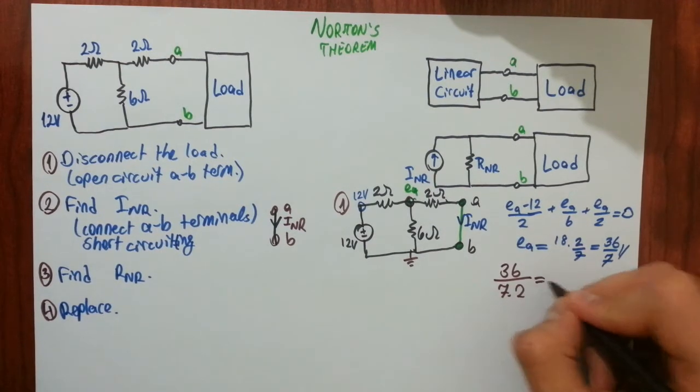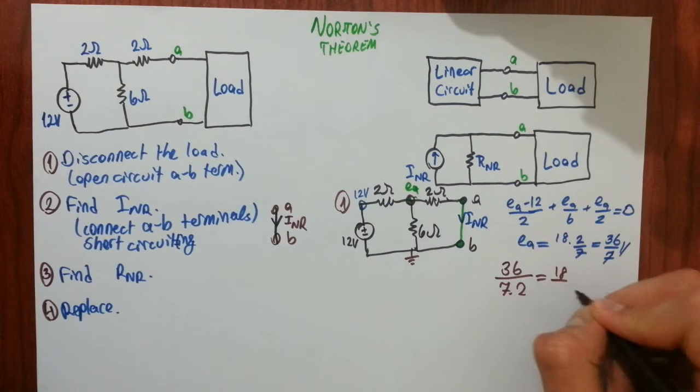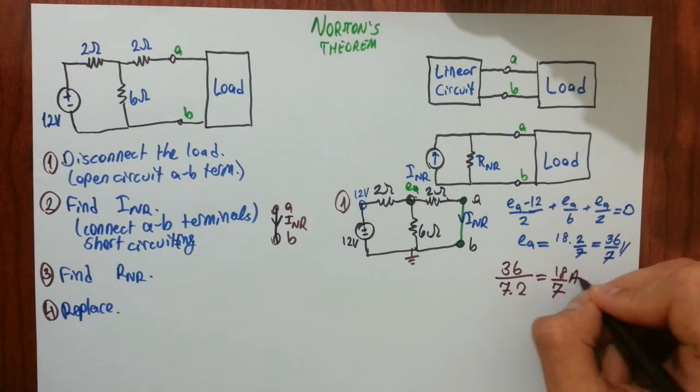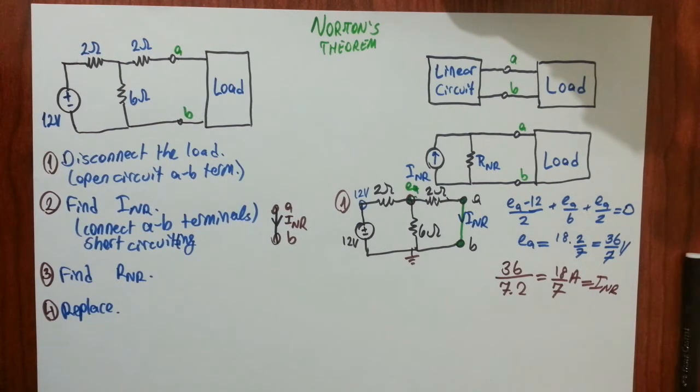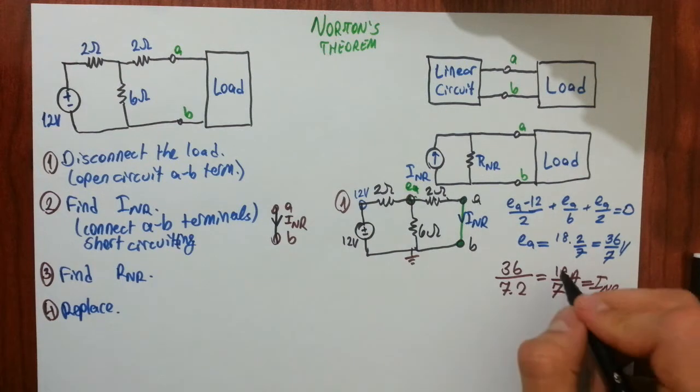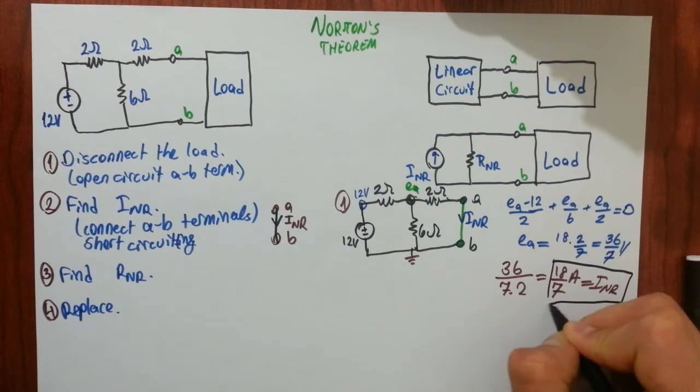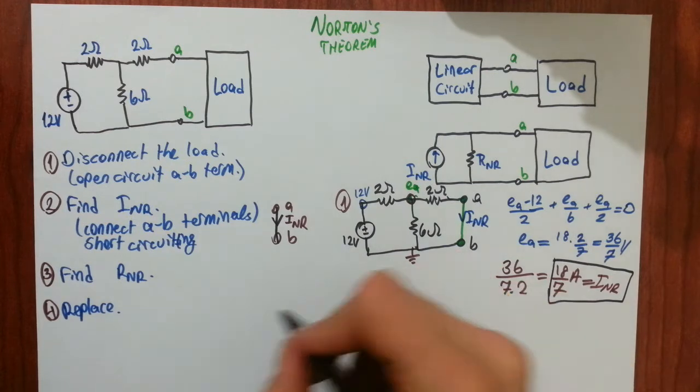To get current. That makes 18 over 7. And unit is amps. That's automatically equal to INR. So we have found INR right now. Let's move on to the third step.